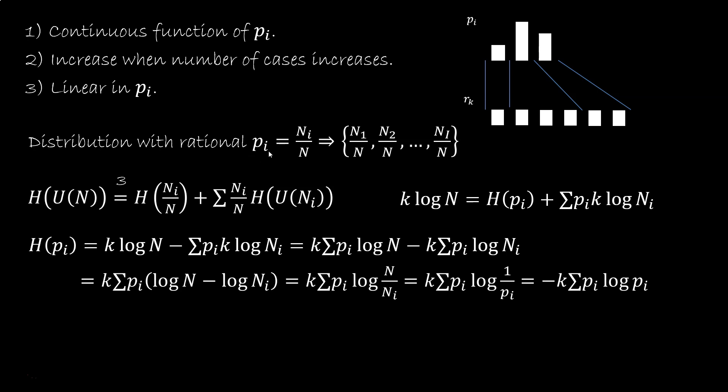But wait, we assumed the Pi's were rational, but we can use property 1, continuity, so the limit will converge for real numbers as well. And now we are really done.